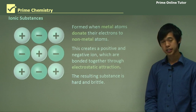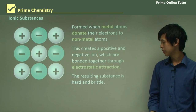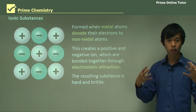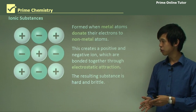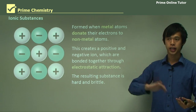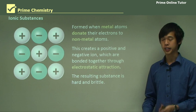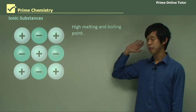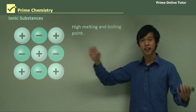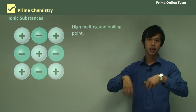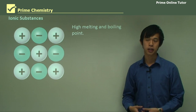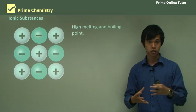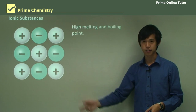The resulting ionic substance is very hard and brittle. It's hard because there's a very strong force of attraction, and it's brittle because certain defects can propagate through very quickly. Ionic substances also have very high melting and boiling points, because of that very strong attraction between the positive and negative charges.